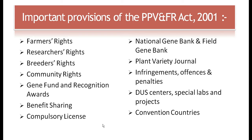The important provisions of the PPVFR Act 2001 relate to the conservation and protection of the rights and privileges of farmers and plant breeders. These include: farmer rights, researchers' rights, breeders' rights, community rights, gene funds and recognition, awards, benefit sharing, compulsory licensing, national gene bank and seed gene bank, plant variety journal, infringements, offenses and penalties, DUS centers, special labs and projects, and convention countries.